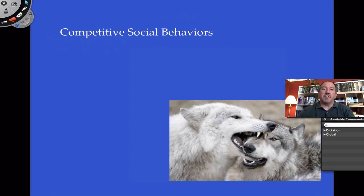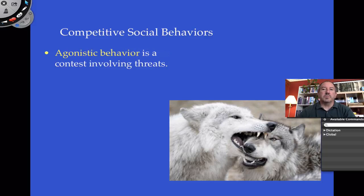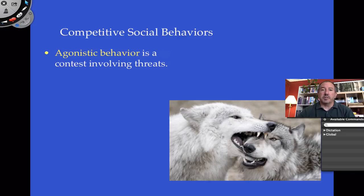Not every social behavior is a positive one like cooperation. Sometimes there are competitive social behaviors that come into play. Organisms in a group could be fighting over mates, food, or resources. In order to get through that, instead of having physical fights which could lead to loss of energy or injury — and even if you feel like you could win, you could be damaged and weakened — organisms in a social environment sometimes engage in what's called agonistic behavior.